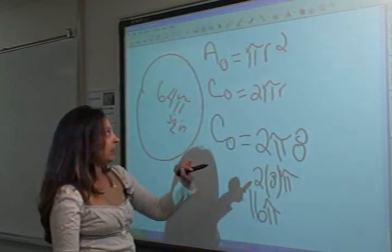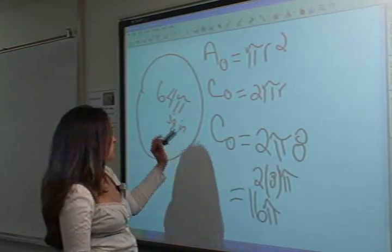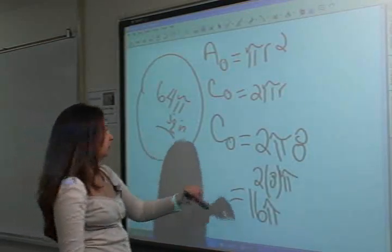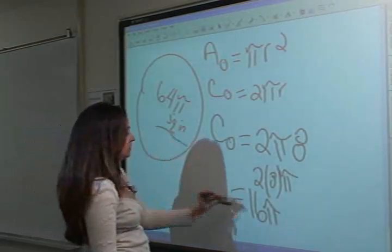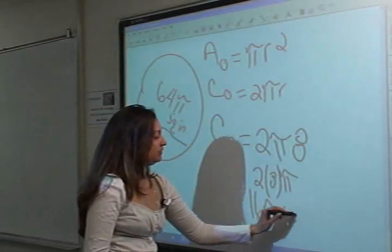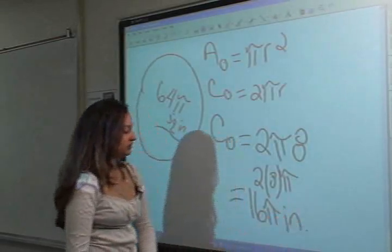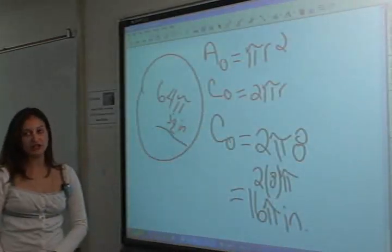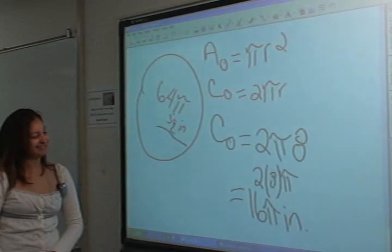And then we are going to bring back our inches. So the answer is 16 pi inches — linear inches.